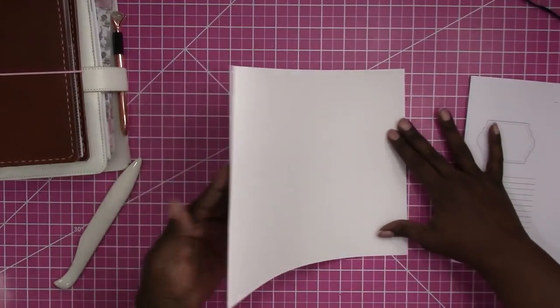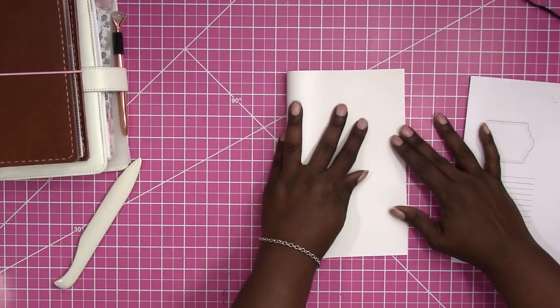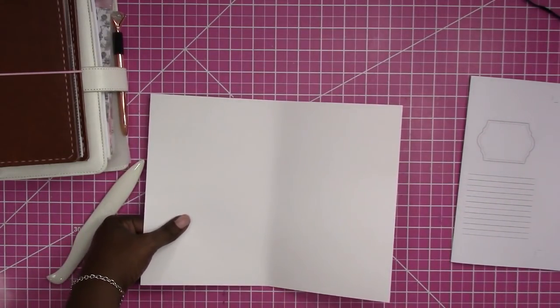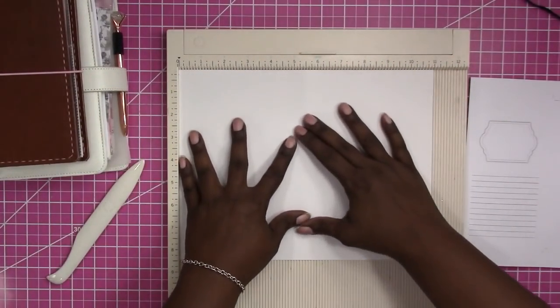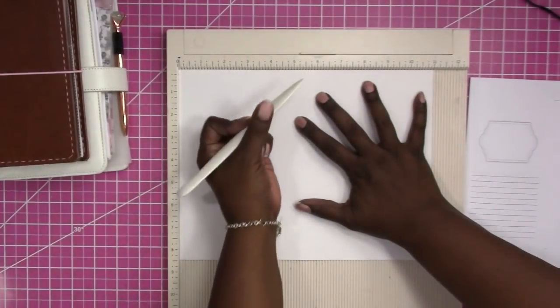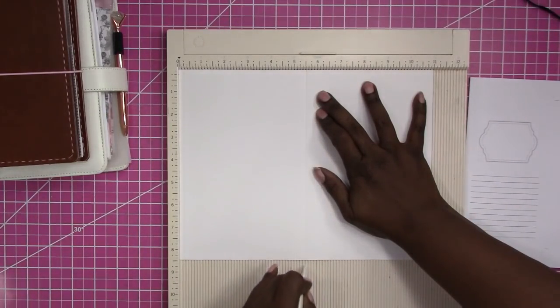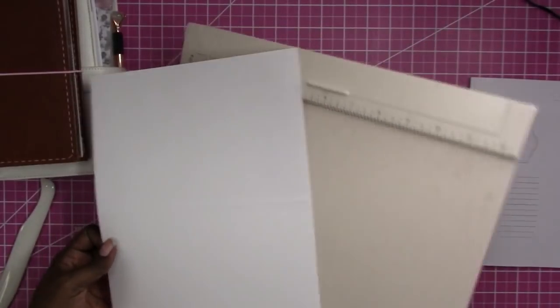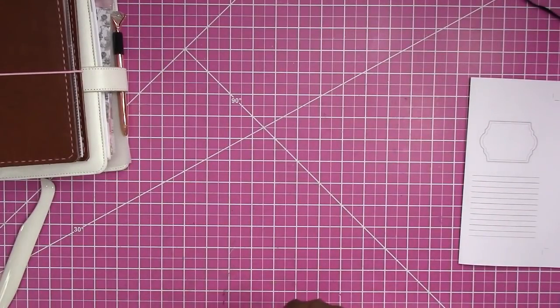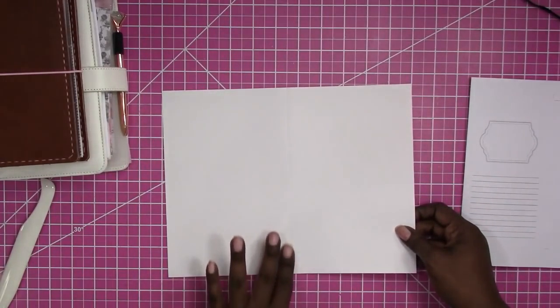Now I'm just going to go ahead and do the cover. For the cover you can go ahead and use your scoreboard. I think I will in this instance. That helps get a cleaner fold and less crinkling of the paper. So I'm going to put it on the scoreboard and score at five and a half inches which is the center of this eight and a half by eleven paper. So I'll just put a quick score there.